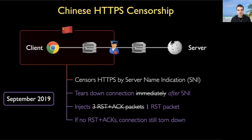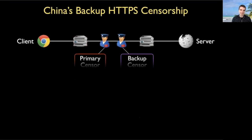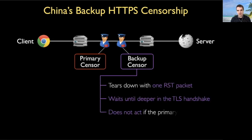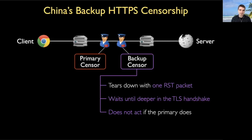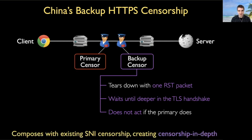What we believe we've discovered is that China has deployed a second backup censorship system. This secondary censorship middlebox tears down connections with a single reset packet. It doesn't act until deeper in the TLS handshake. And most interestingly, it does not act if the primary does. This is actually why we believe that the system went undetected for so long by researchers. Together, this composes with the existing SNI censorship to create stronger censorship in depth.